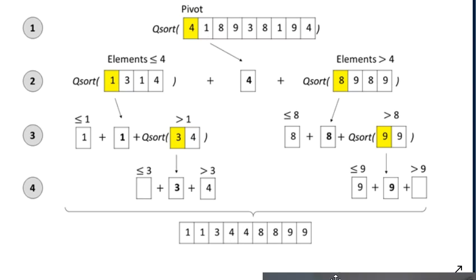The quicksort algorithm is a recursive algorithm — the algorithm calls itself. In the first function call, you call qsort and pass the list. What the algorithm does is pick a pivot element and split the list into an unsorted sublist with all elements smaller or equal than the pivot — the left list — and all elements larger than the pivot to the right. We pick the element 4 as pivot, place smaller or equal elements to the left and larger elements to the right, making some progress toward sorting.